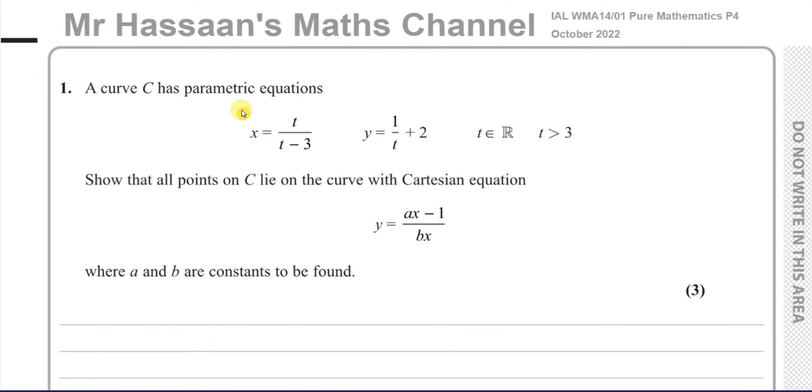Now the first question here is about parametric equations. Very short question, a little warm-up type of question. We have to express this parametric equation which is in terms of x and y and a third parameter t such that it's just in Cartesian form, meaning in terms of y only, and they've given us a form they want us to write it in with y as the subject of the formula.